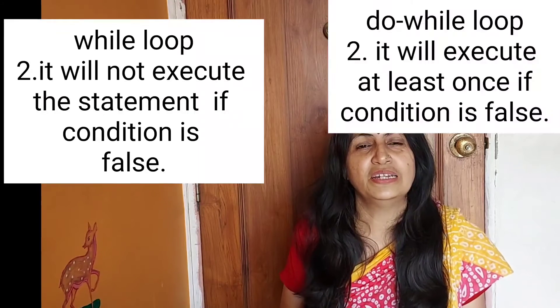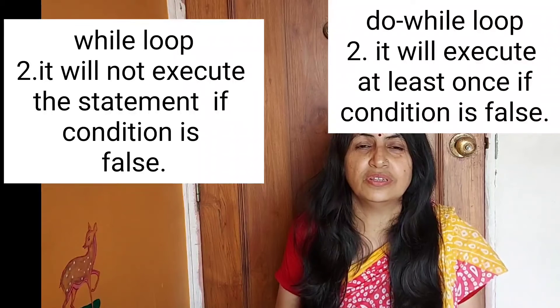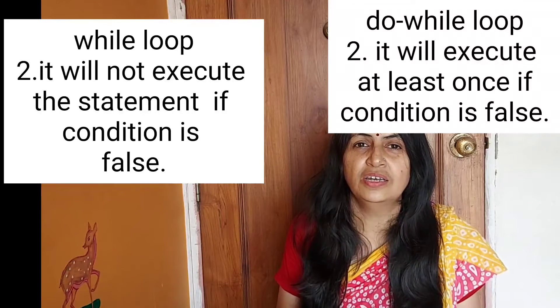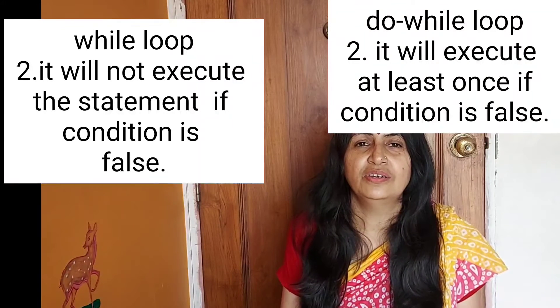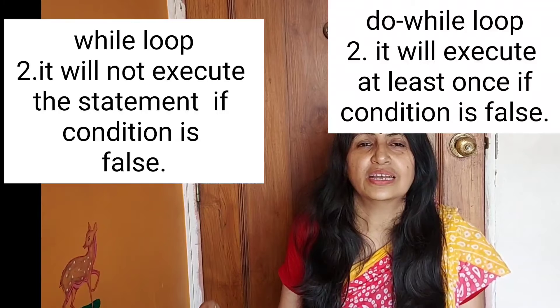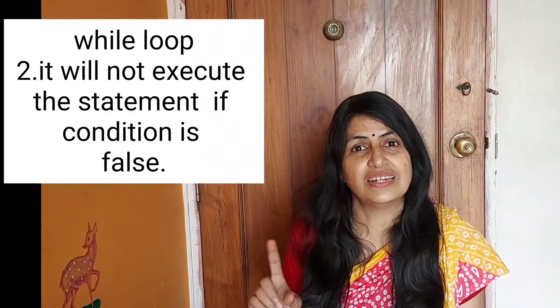The second difference is: when we use while loop, if the condition does not satisfy, then the statement will not execute. But in do while loop, when the condition does not satisfy, the program will execute at least once. This is the main difference between while and do while loop.